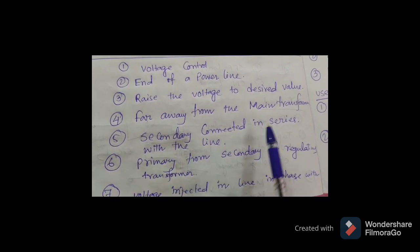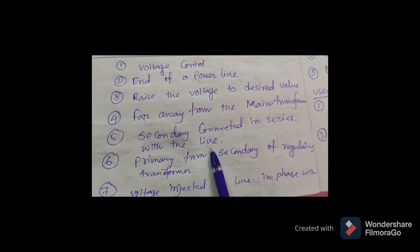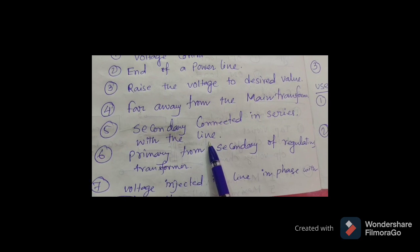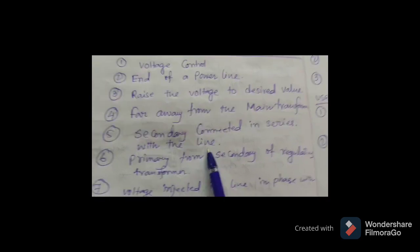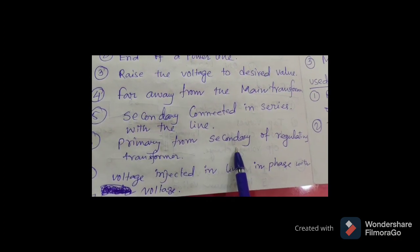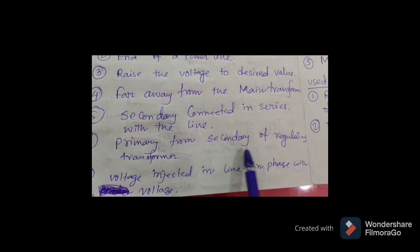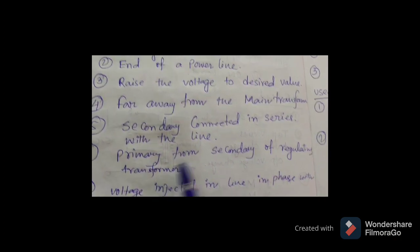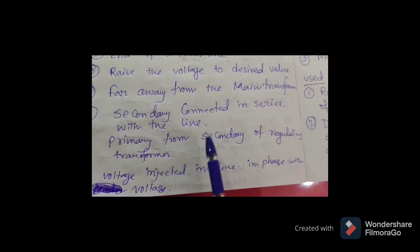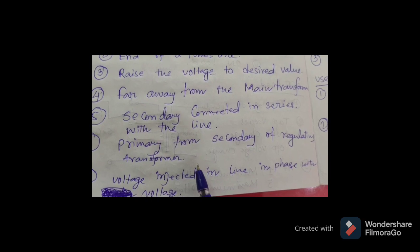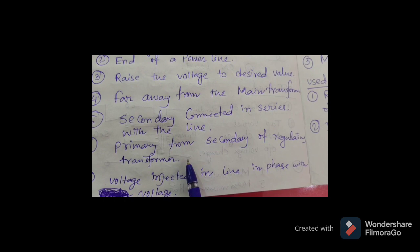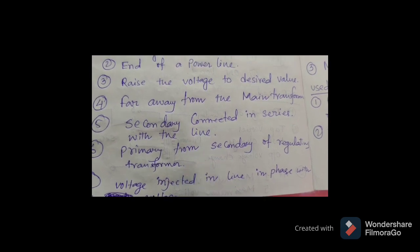The secondary of the booster transformer is connected in series with the line whose voltage is to be increased. The primary of the booster transformer is fed from the secondary of the regulating transformer. The regulating transformer is also used there for controlling the voltage of the primary of the booster transformer.